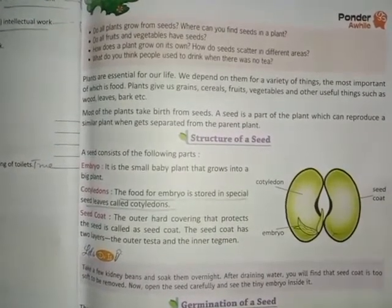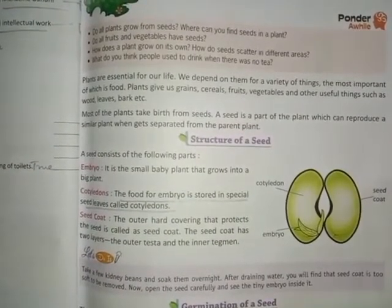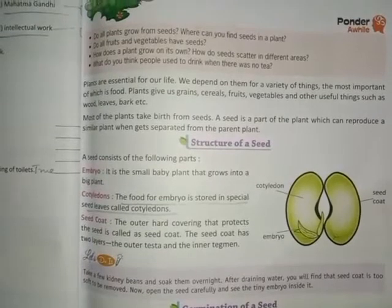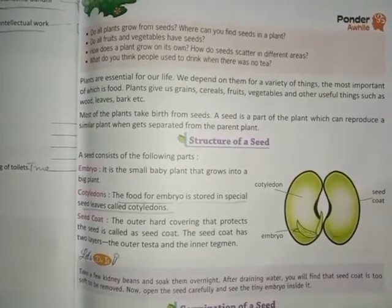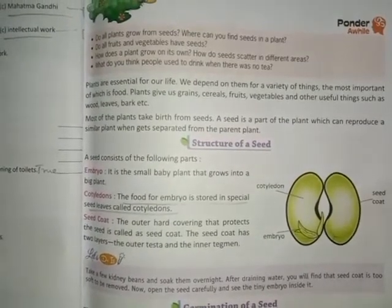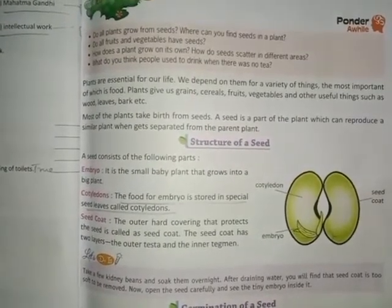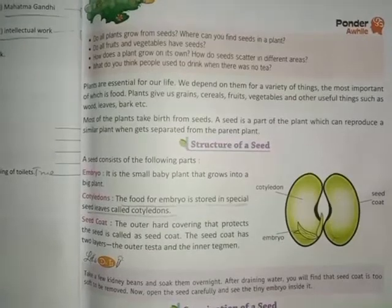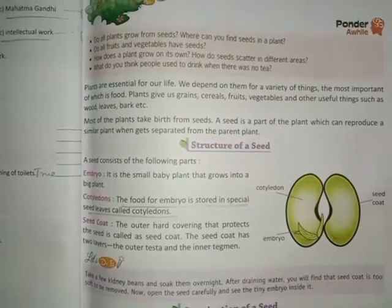The seed consists of three components: embryo, endosperm, and seed coat.